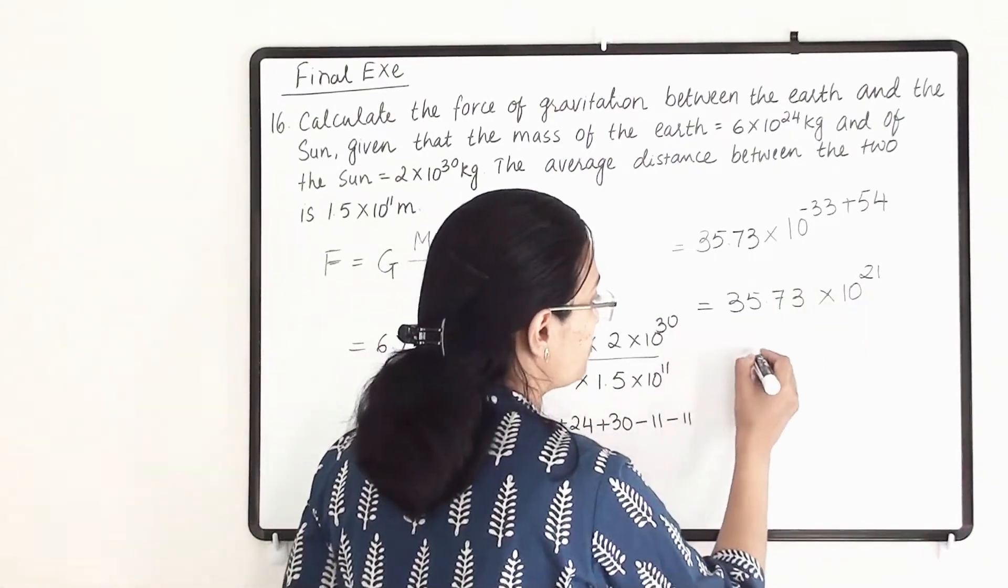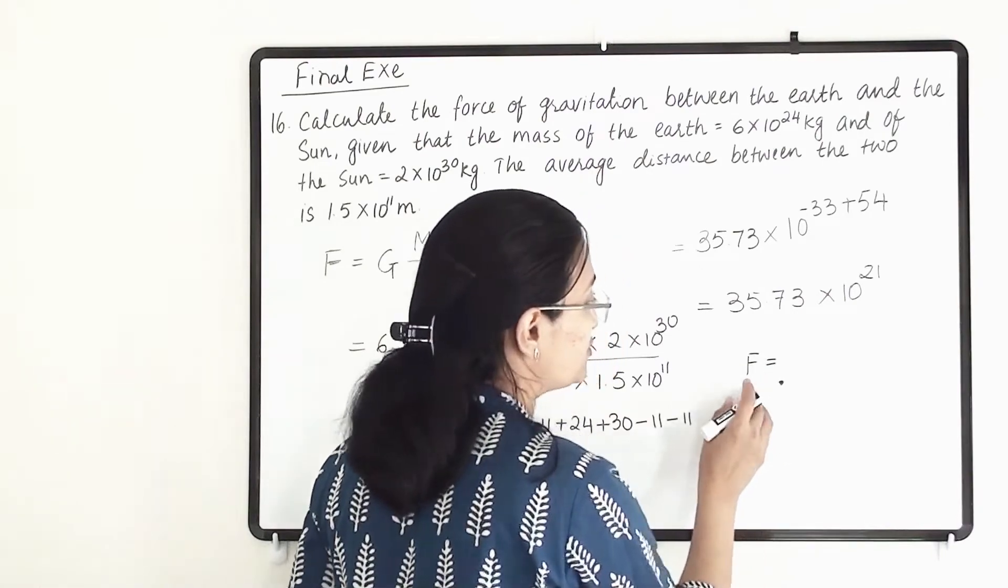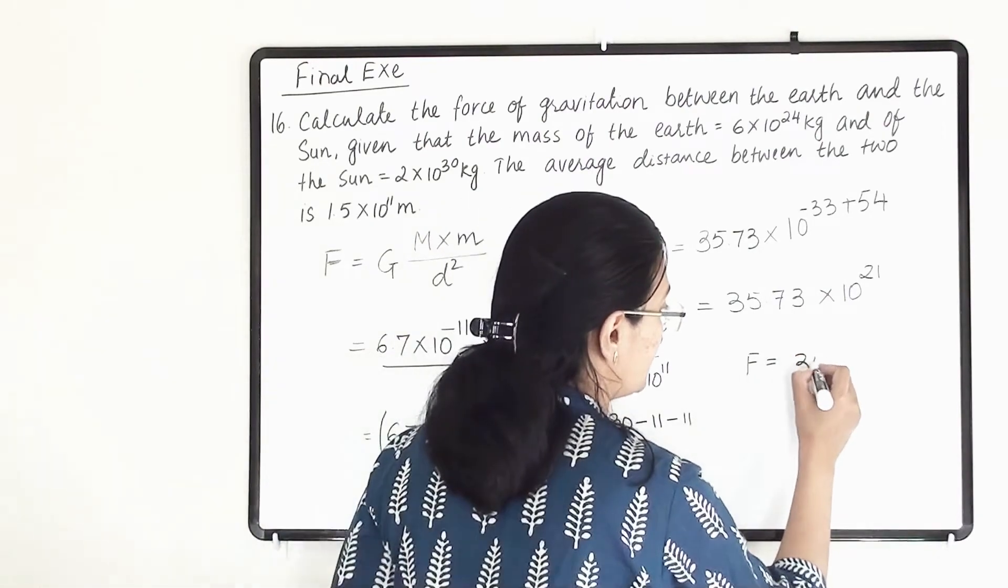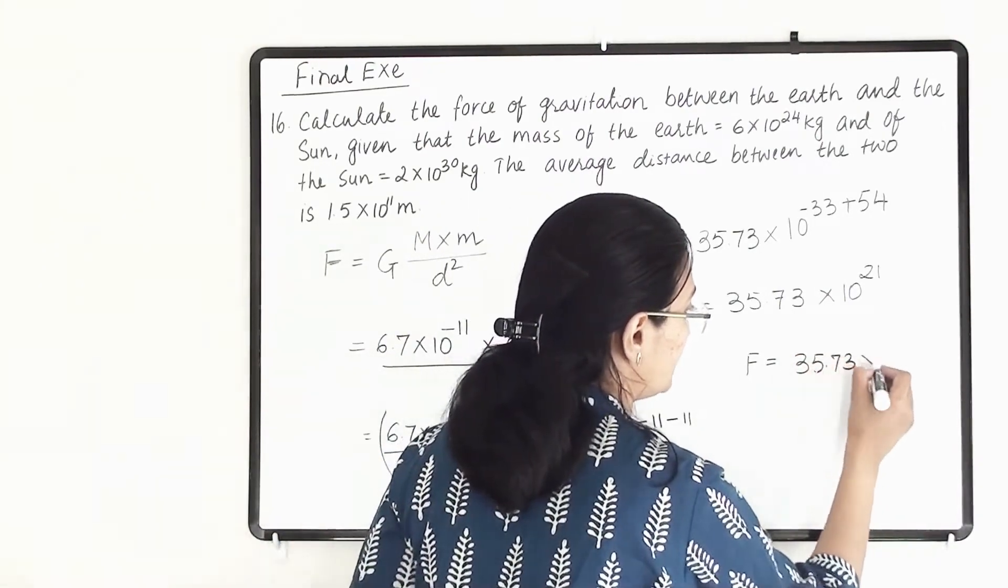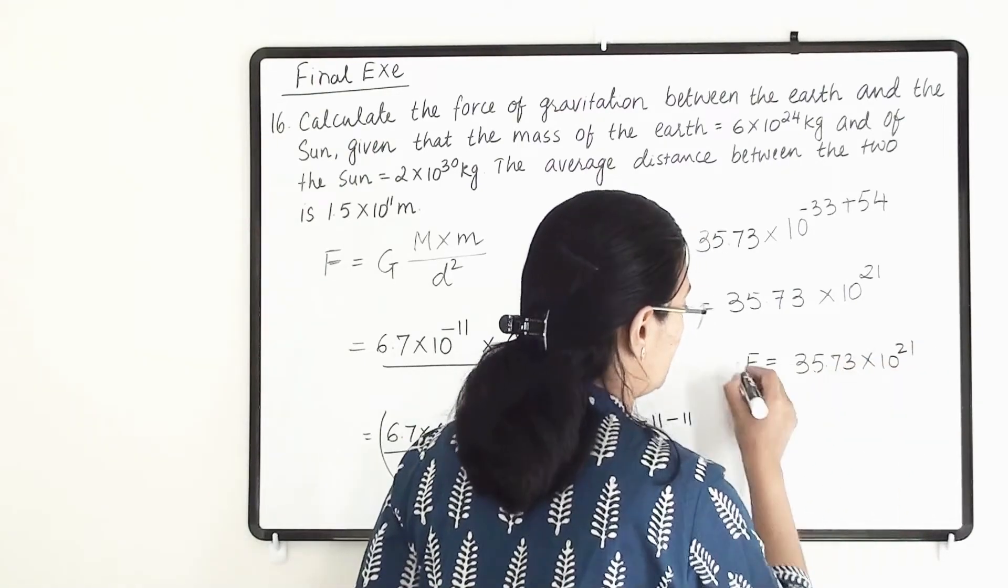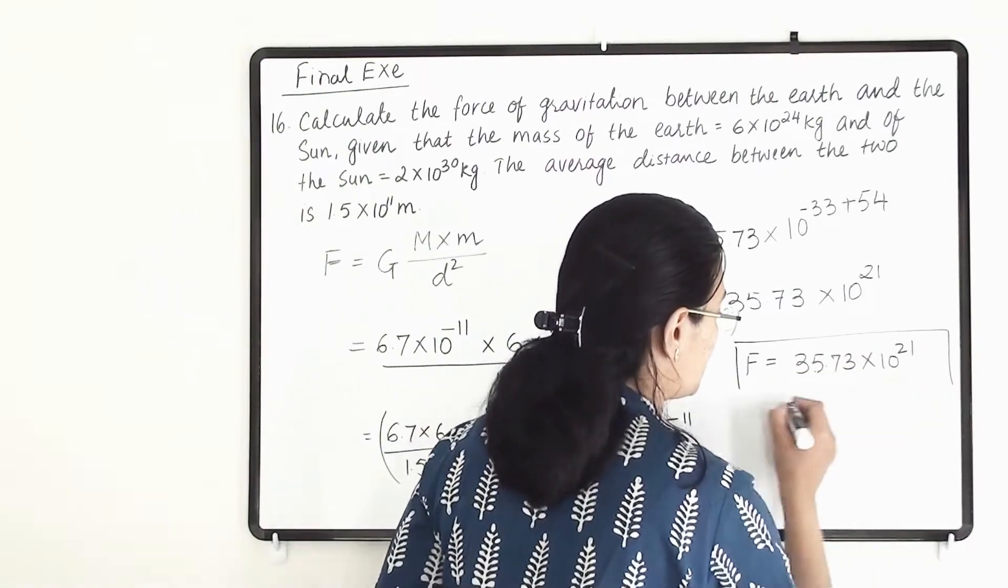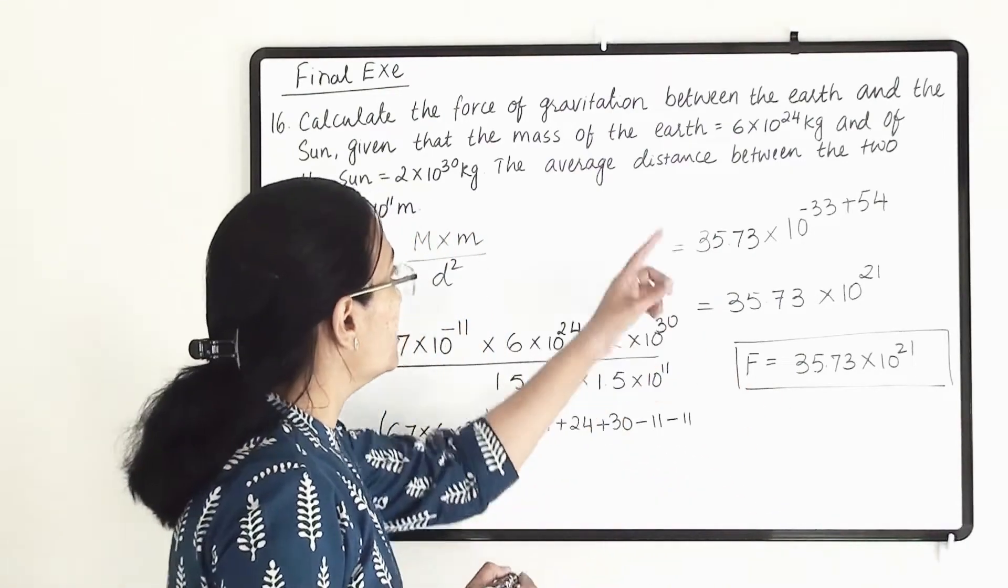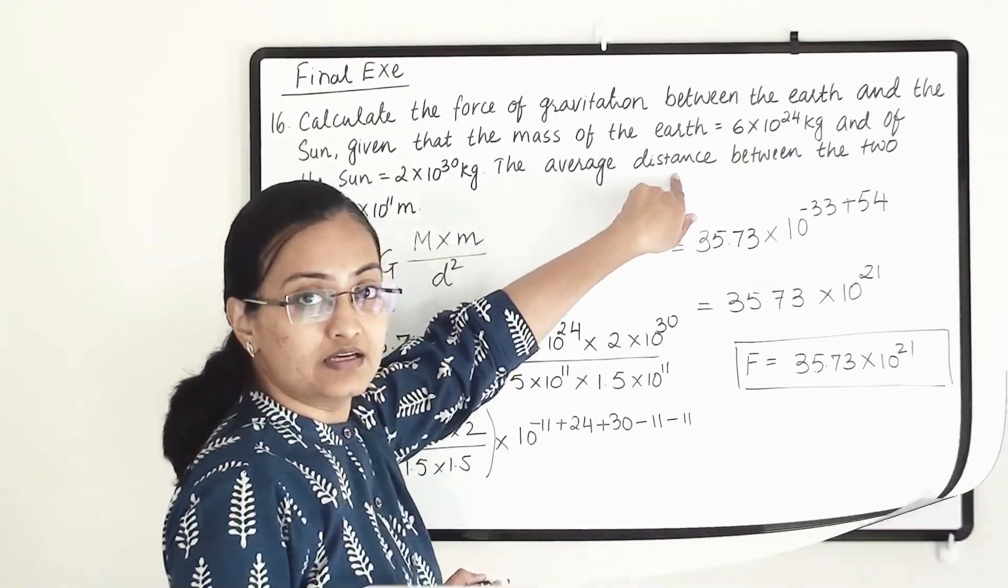So this is the answer: the gravitational force between the Earth and Sun is 35.73×10²¹ Newtons. This much gravitational force will be applicable between the Earth and Sun.